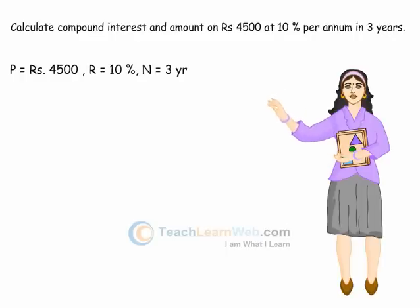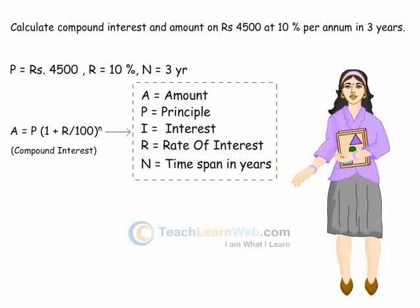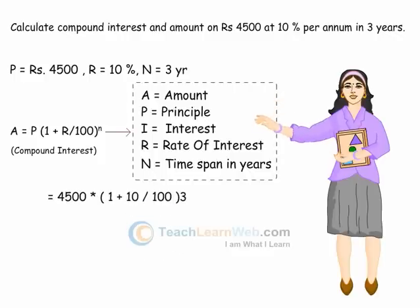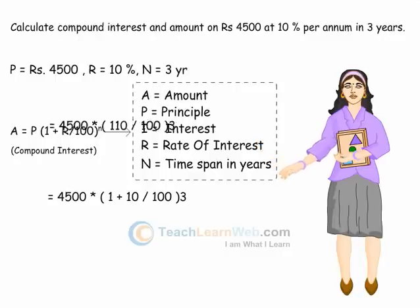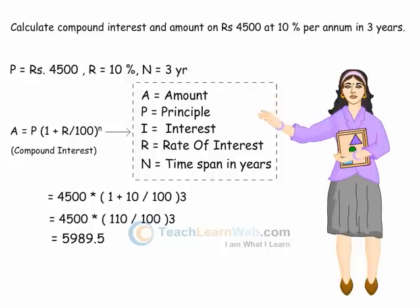A is equal to P times (1 + R/100) whole power N, which equals 4,500 into (1 + 10/100) whole power 3, giving A equal to Rs 5,989.5.